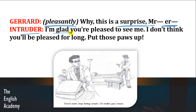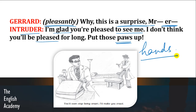Intruder replies: 'I am glad you are pleased to see me. I don't think you will be pleased for long. Put those paws up.' Paws means hands. Ab yeh intruder kehta hai — mein bahut khush hoon ki tum mujhe dekh kar itne khush ho, lekin tumhari yeh khushi zyada der tak nahi chalegi. Kyun? Kyunki intruder ka plan yeh hai ki usne isko maarna hai. Aur phir woh usse kehta hai ki apne haath upar karo.